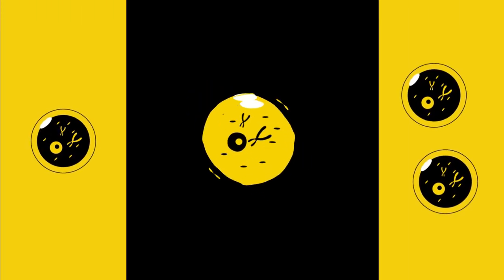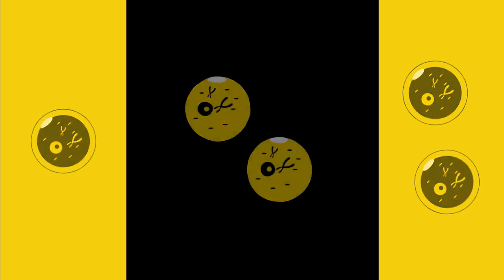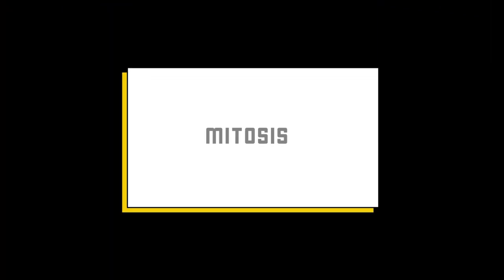During cell division, the chromosomes are duplicated. We will look at this in more detail in future videos, such as what is mitosis.